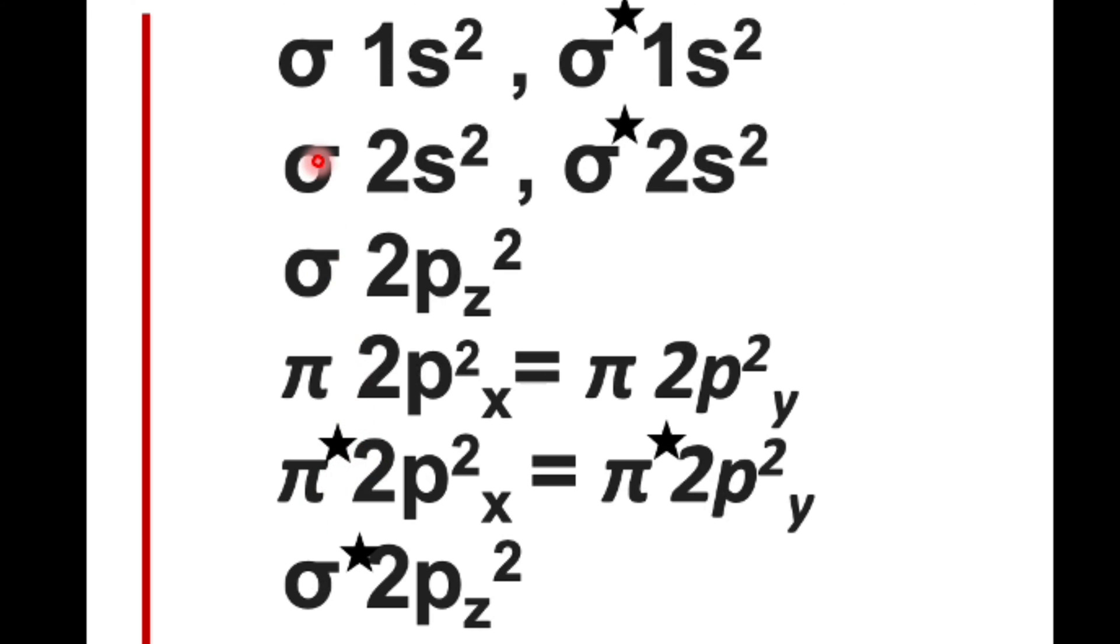Here you can see a table which shows the filling of molecular orbitals in increasing energy level. It means after filling sigma 1s orbital, then only electron can enter into sigma star 1s orbital, then sigma 2s, then sigma star 2s.